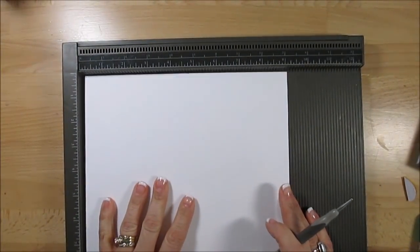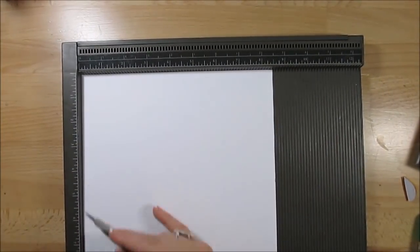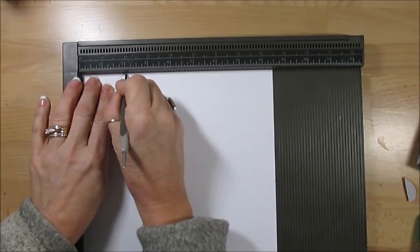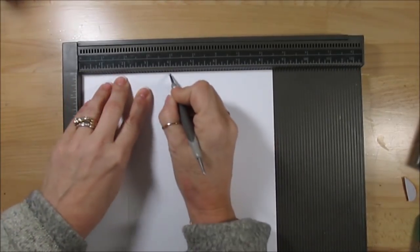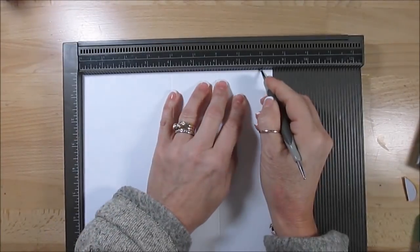So we're going to start with a piece of cardstock that measures 8.5 by 9 inches. Now we're going to score the 8.5 at the top. We're going to score at 2, 4, 6, and 8.